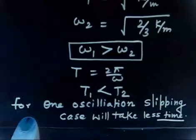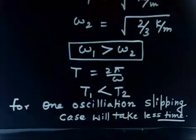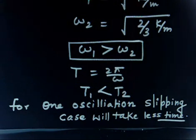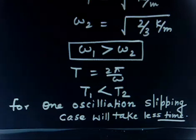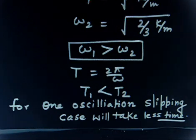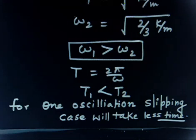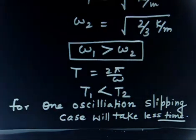This is an important result. If the cylinder is only slipping with no rolling, it oscillates faster — less time per oscillation. If it is rolling without slipping, it also has rotational motion, so it takes more time for one oscillation. Remember: slipping only → less time; rolling without slipping → more time.